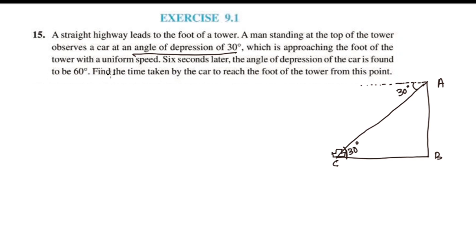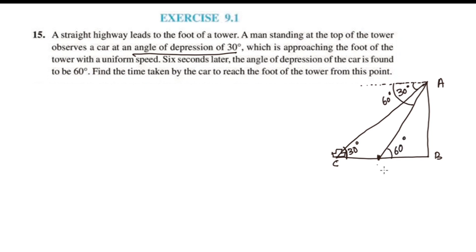The car is approaching the foot of the tower with a uniform speed. Six seconds later, the angle of depression of the car is found to be 60 degrees. So the car has moved and the angle of depression is now 60 degrees. We will call this point D.